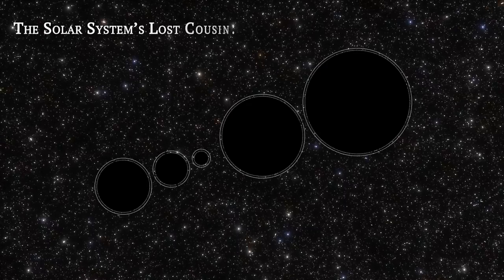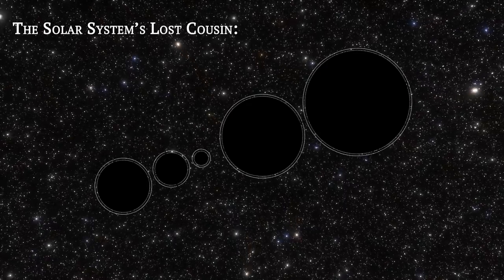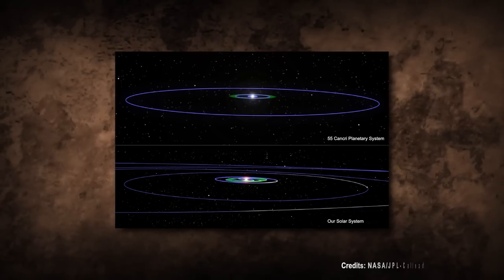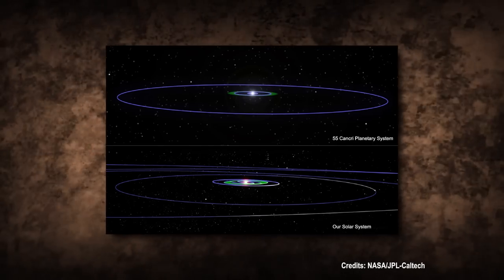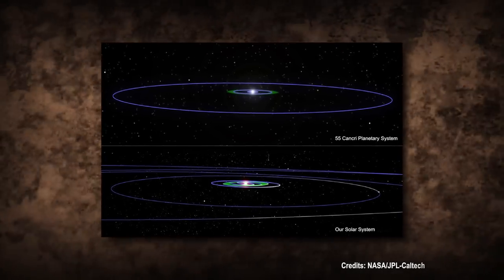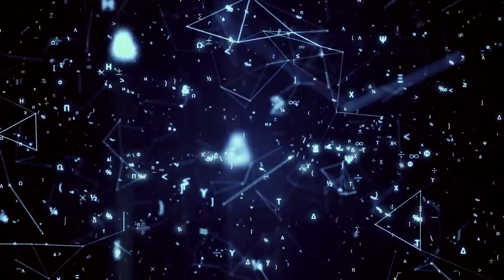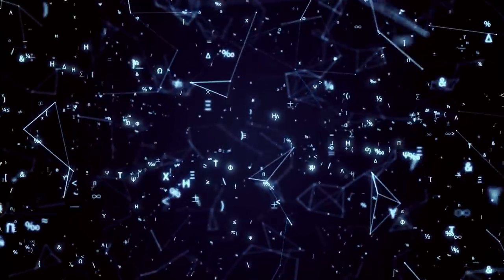The solar system's lost cousin. Speaking of the solar system as a whole, the 55 Cancri system is currently the closest known analog to our solar system. Yet, there are some crucial differences. Let's delve into the scientific details to understand these disparities.